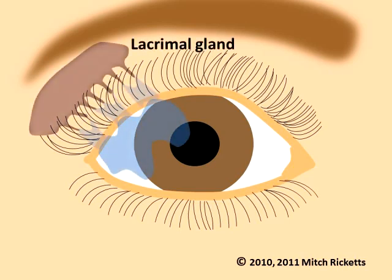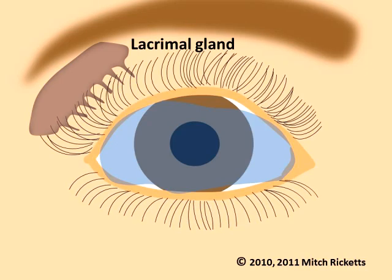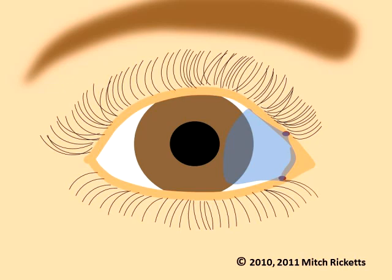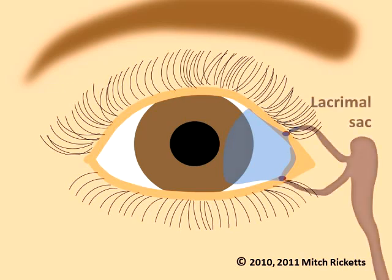Tears from the lacrimal gland help lubricate and wash debris from the surface of the eyes. When we blink, tears are spread over the eyeball. After coating the eyes, tears and mucus flow toward tiny canals in the eyelids. The canals lead to the lacrimal sacs, which drain mucus and tears into the nose. This is why we often have to blow our noses when our eyes water.